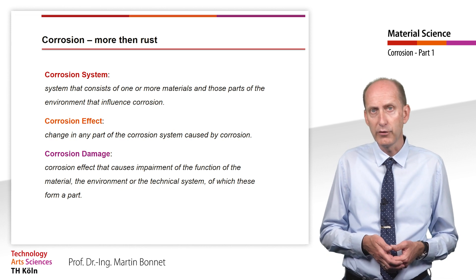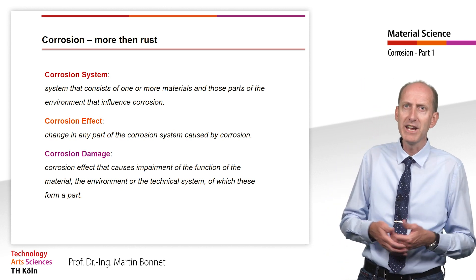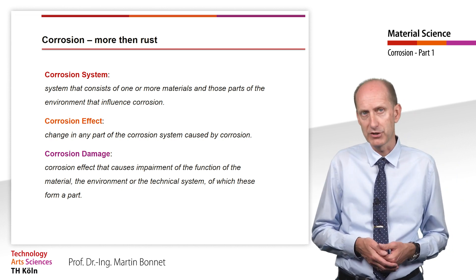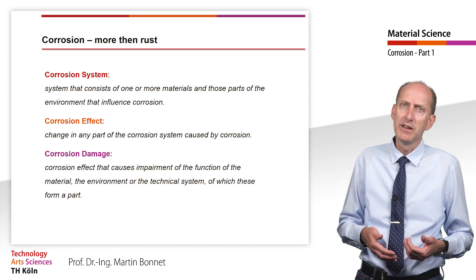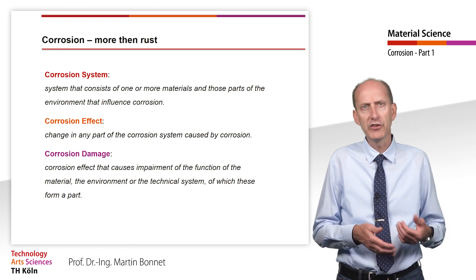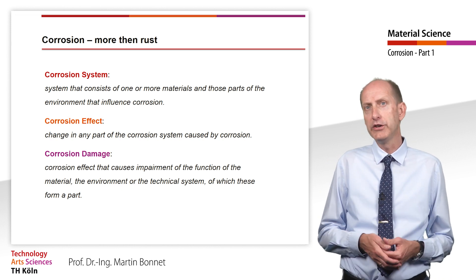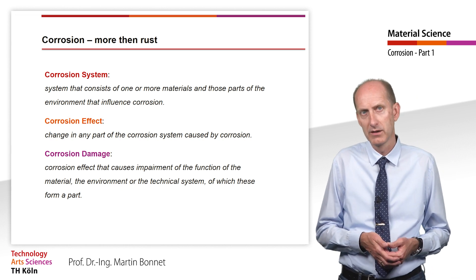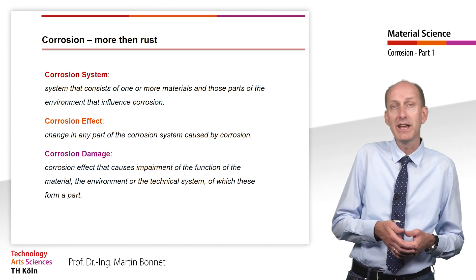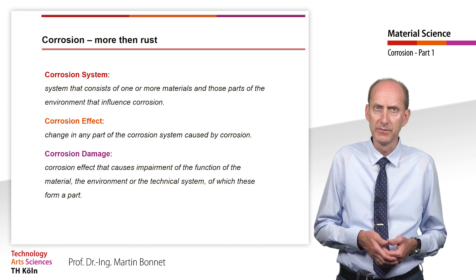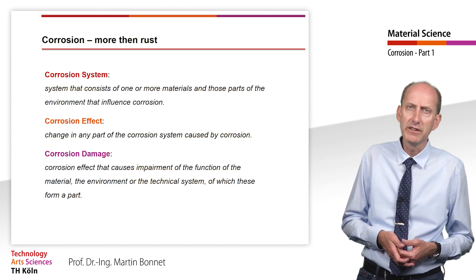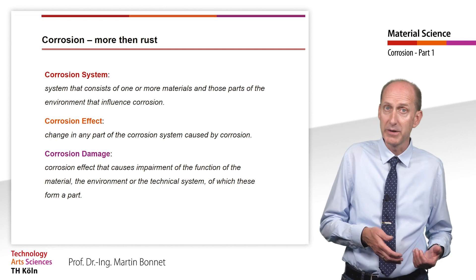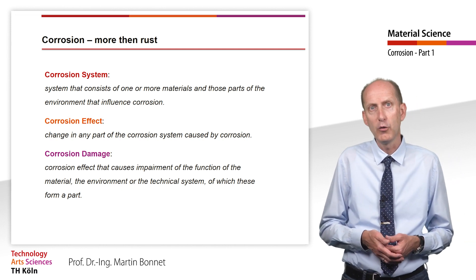According to EN ISO 8044, fundamental distinctions are made between the terms corrosion system, corrosion effect and corrosion damage. The norm defines a corrosion system as a system that consists of one or more materials and those parts of the environment that influence corrosion. Corrosion effect refers to change in any part of the corrosion system caused by corrosion. Corrosion damage is defined as a corrosion effect that causes impairment of the function of the material, the environment or the technical system of which these form a part.